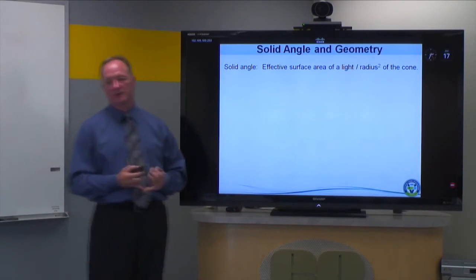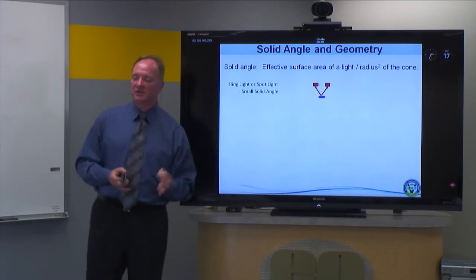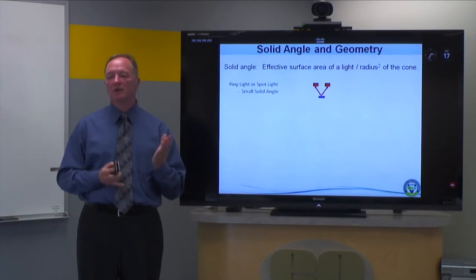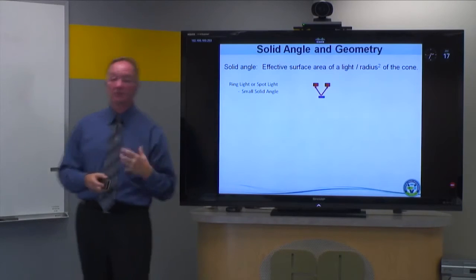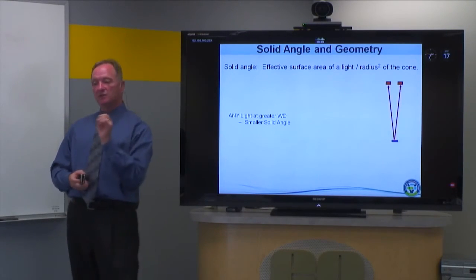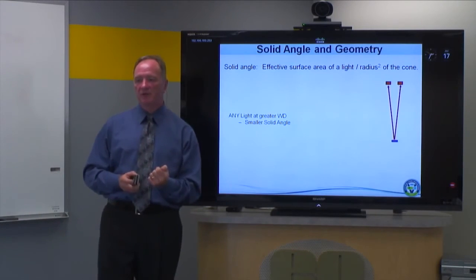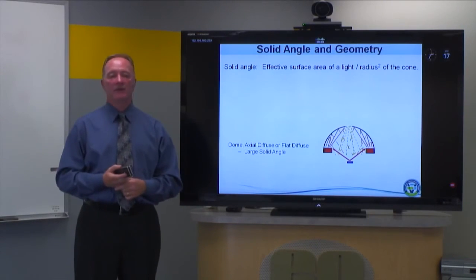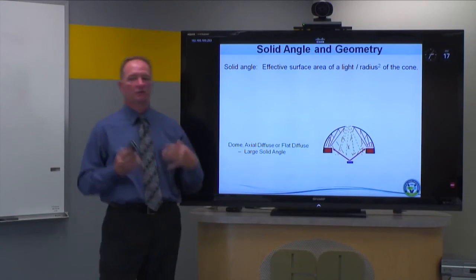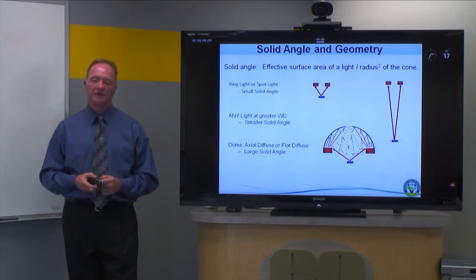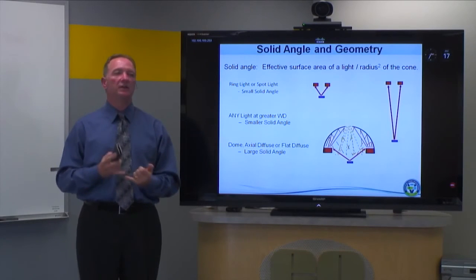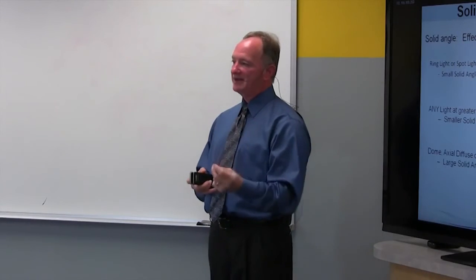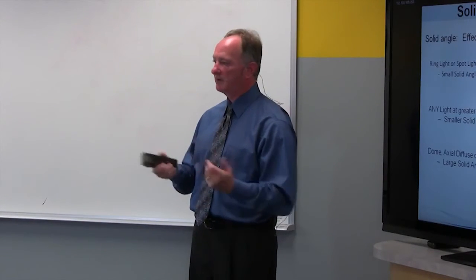If you're dealing with diffuse surfaces or diffuse lighting, you may want to be familiar with the concept of solid angle. A ring light or spotlight has a relatively small solid angle — the angle from which light is coming to be incident on the surface is relatively minor — and as you increase working distance that angle gets even worse. A dome light, by contrast, has a very large solid angle and is great for imaging curved reflective surfaces like ball bearings. So even if you need a ring light geometry, you can still optimize your solid angle to some extent if you have a problem with reflective surfaces.